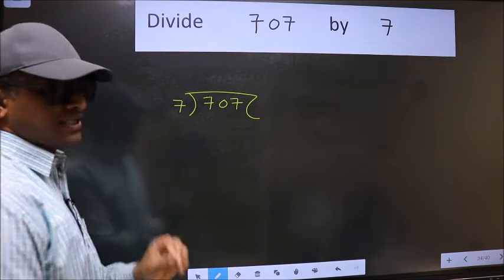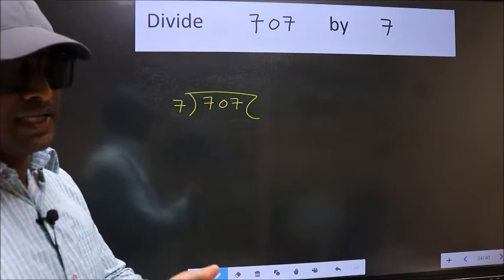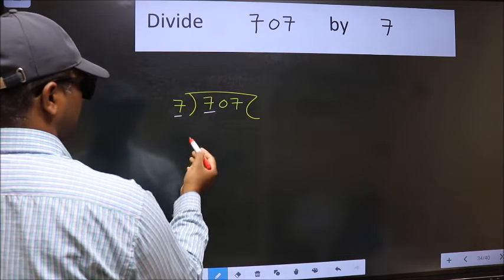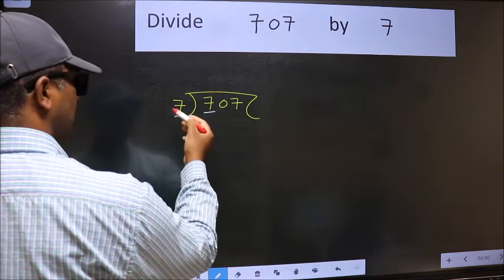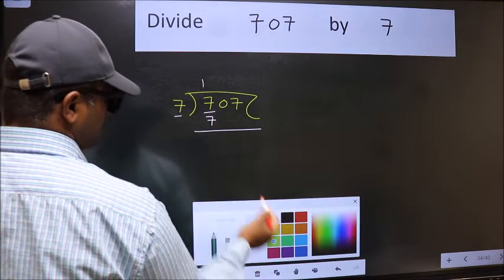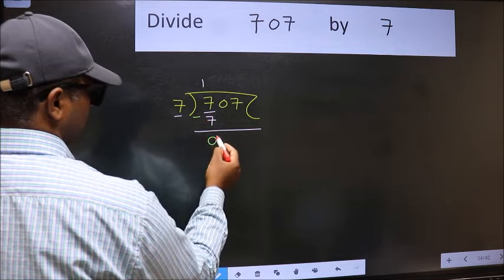This is your step 1. Next, here we have 7 and here 7. When do we get 7 in the 7 table? 7 once 7. Now we should subtract. We get 0.